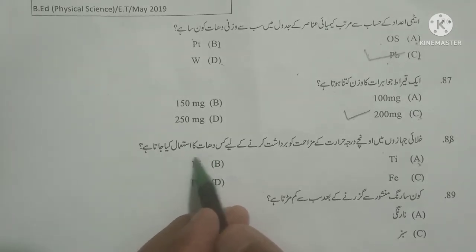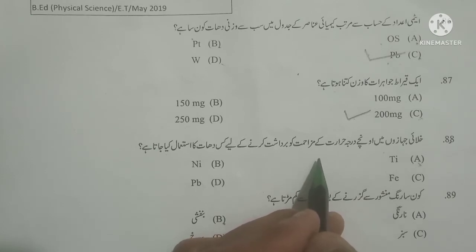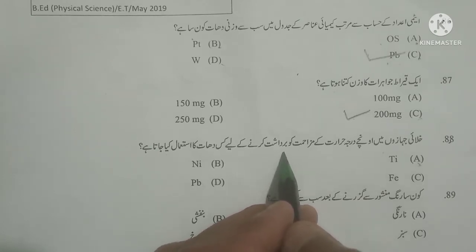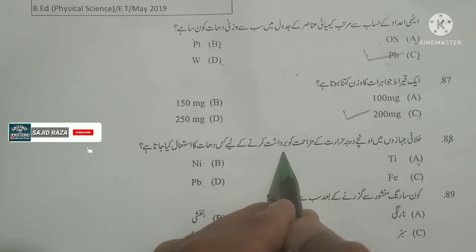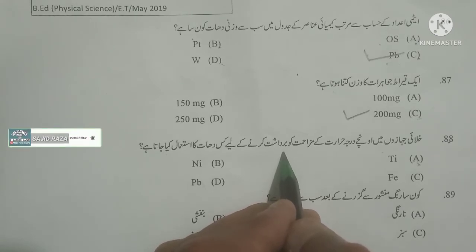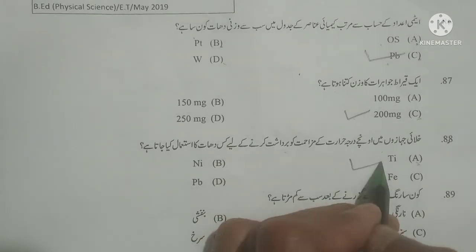Next question: Which metal is used in spacecraft to withstand high temperature resistance? As you know, titanium is used in spacecraft to withstand high temperature resistance. Option A is correct.